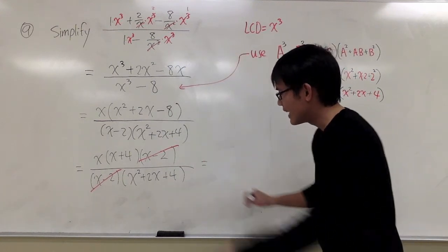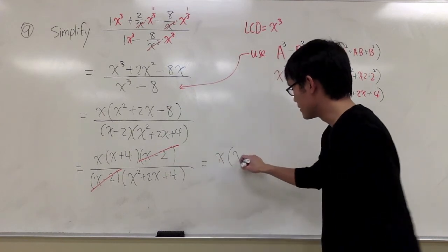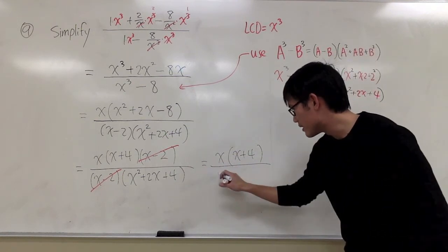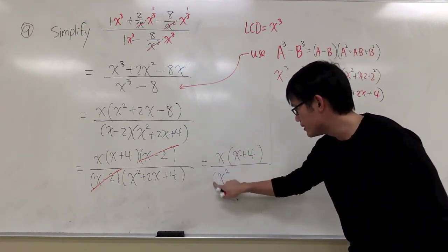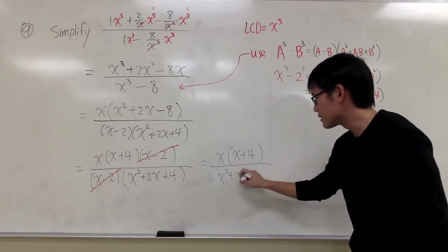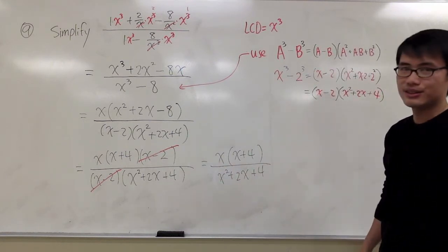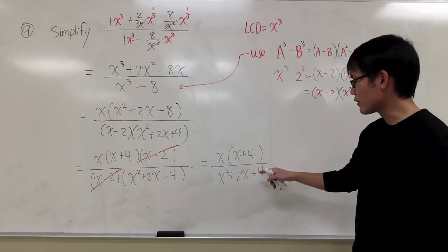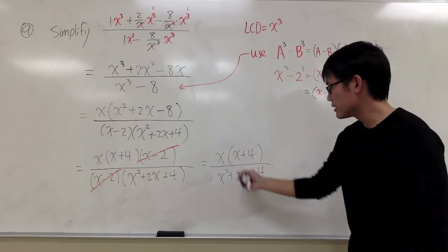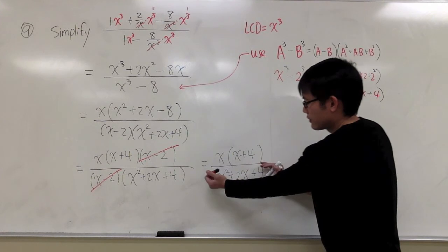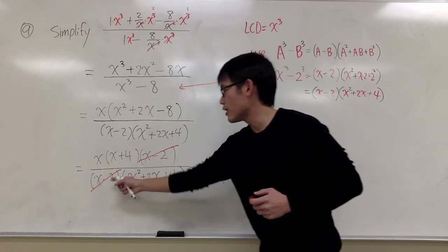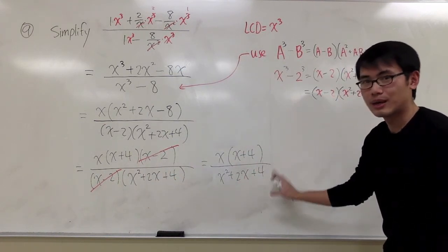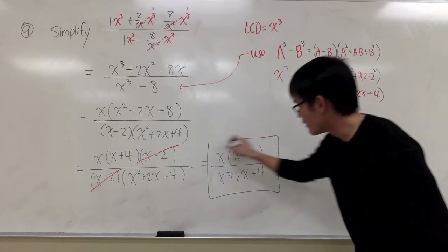Final answer: I get x times (x plus 4) on top, over x squared plus 2x plus 4 on the bottom — just like that. And that's pretty much it; that's the most we can do. Do not cancel the 4, do not get rid of the x or things like that, because this is by itself in parentheses. Keep in mind you can only cancel factors — parentheses like this. But this is the most that we can do, and that would be the answer.